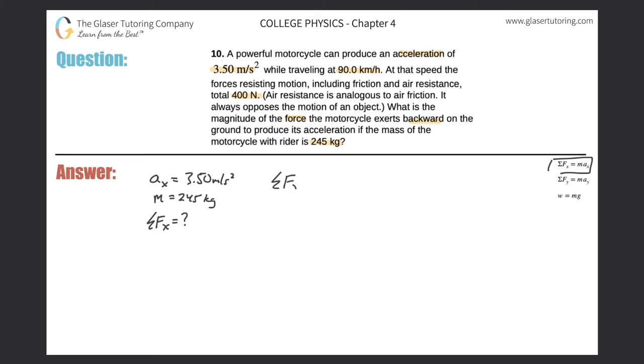So the sum of all the forces in the x direction, meaning the net force on this motorcycle, will be equal to 245 multiplied by 3.50. So the sum of all the forces in the x direction should equal, let's just take out the calculator, 245 times 3.5. So we get 858. It looks like 858. And that is newtons. That is the net force.